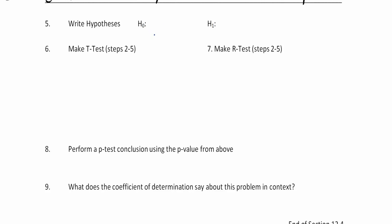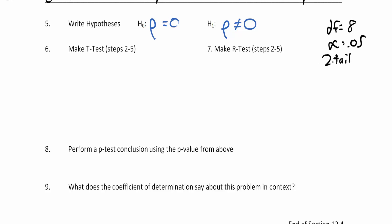The null hypothesis is ρ equals 0 — no correlation between age and GPA. The alternative says there is a correlation. Off to the side: we need 8 degrees of freedom, alpha of 0.05, and a two-tail test because the alternative is ρ ≠ 0. Step 1: get the critical values from the t-chart — both critical values will be plus or minus.